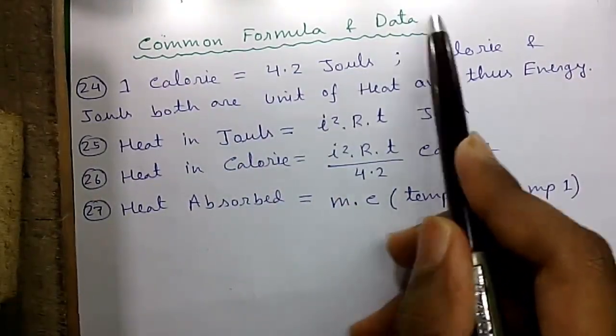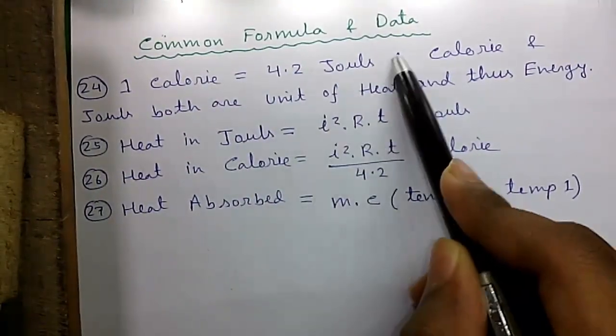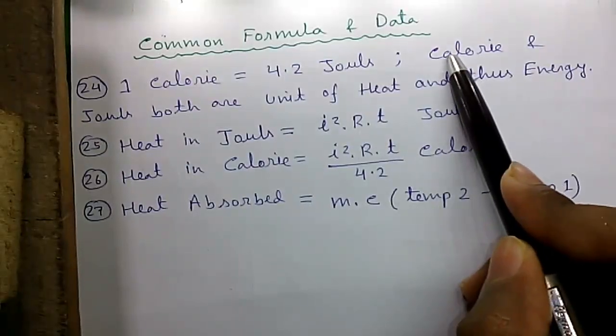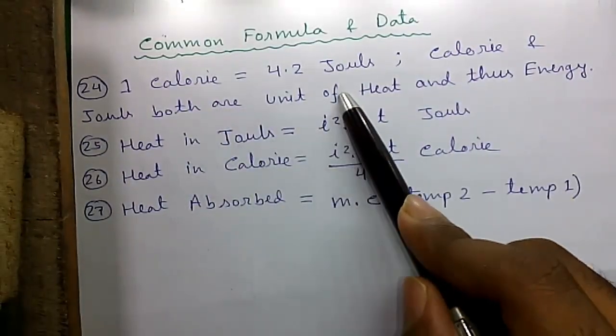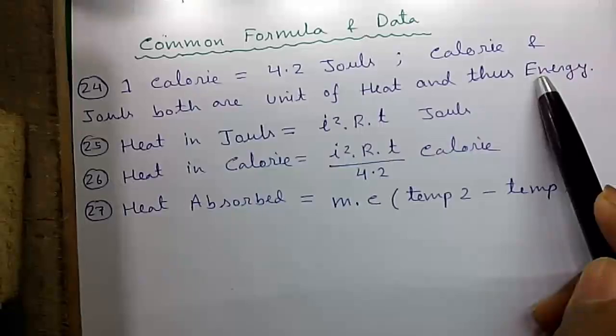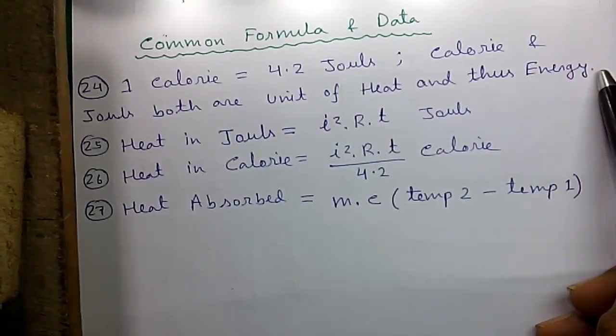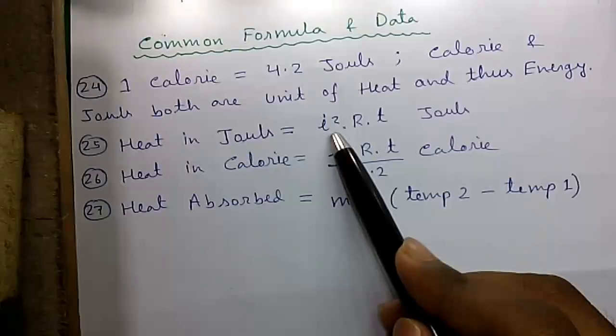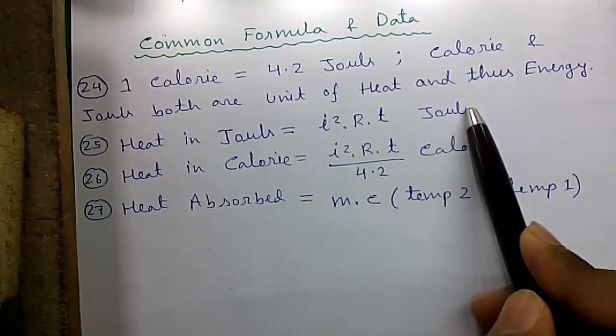Now, some common formulas and data. 1 calorie equals 4.2 joules, where calorie and joules both are units of heat, and thus units of energy, because heat is one kind of energy.